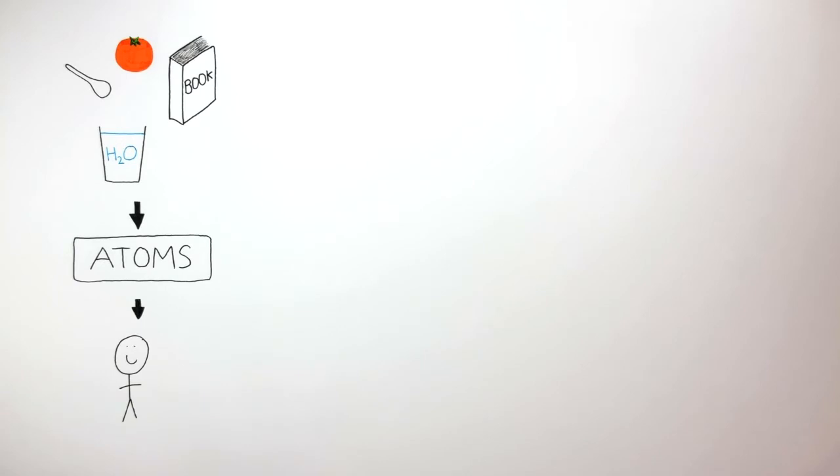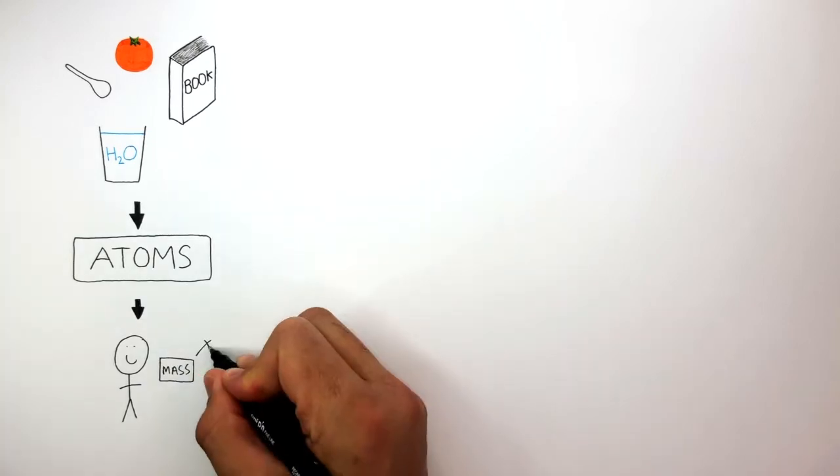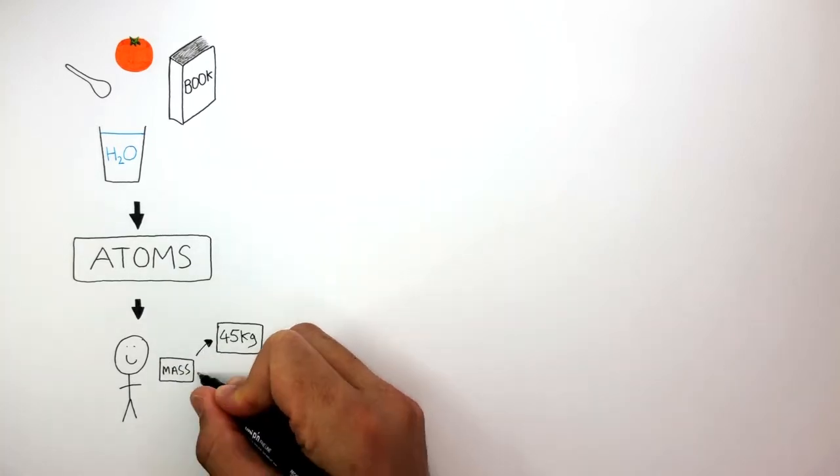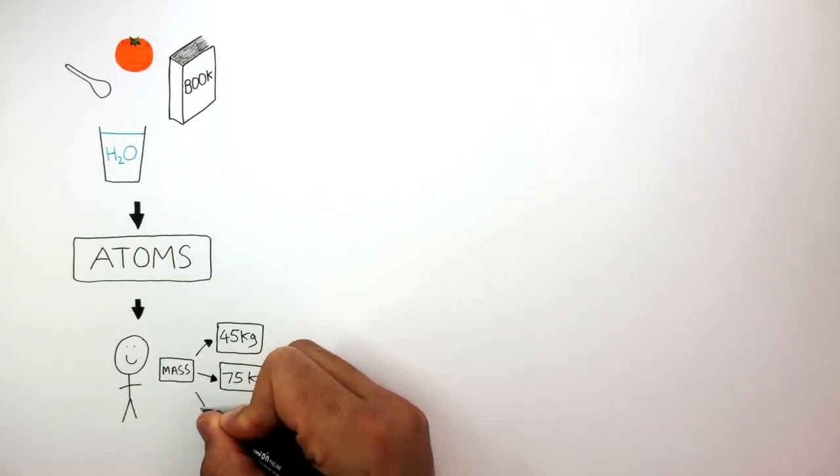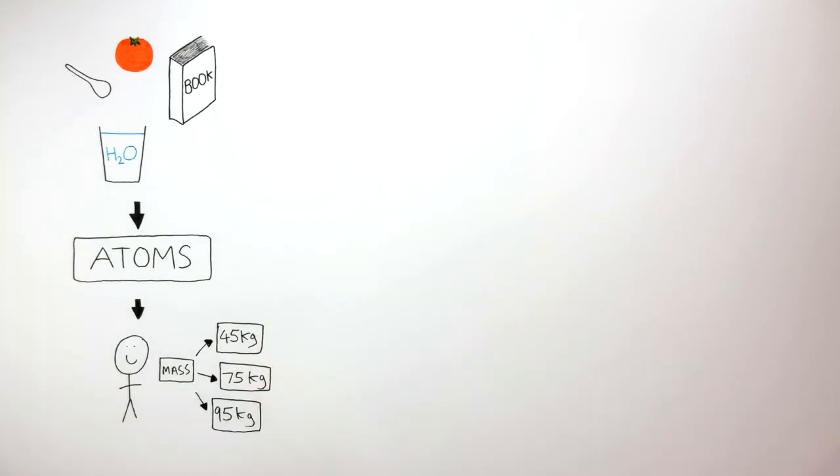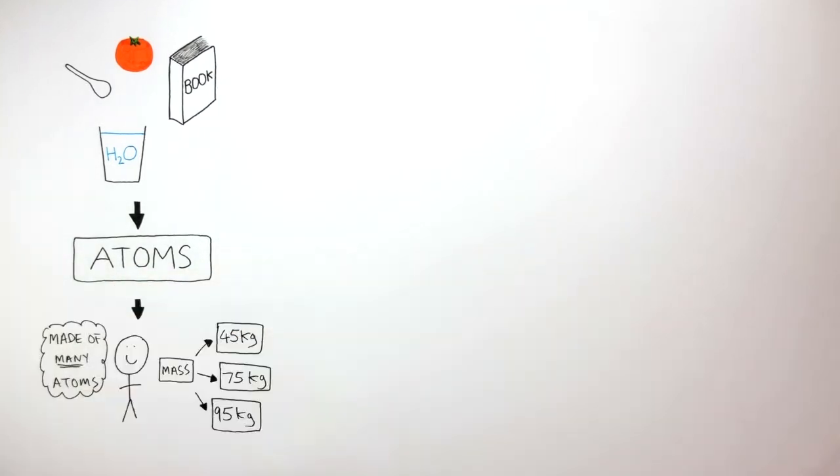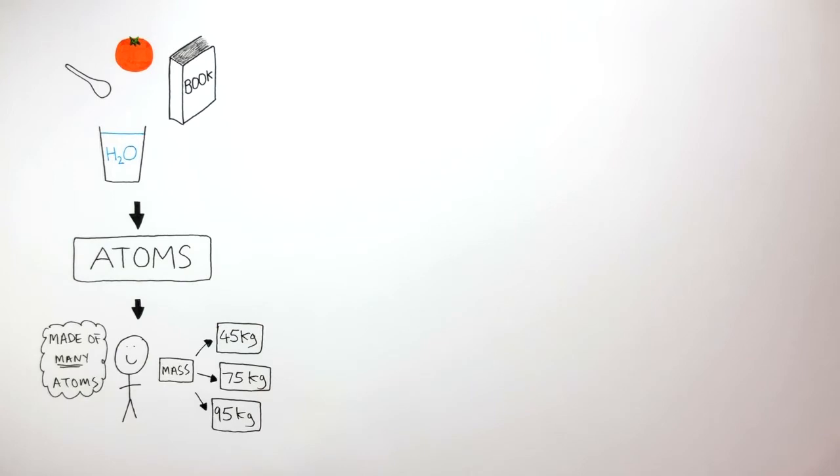This diagram represents any random person, and we know we're all made of atoms. Let's say the mass of this person could be 45 kilograms, 75 kilograms, or maybe 95 kilograms. The more atoms we're made of, the bigger our mass. The less atoms we're made of, the smaller our mass.